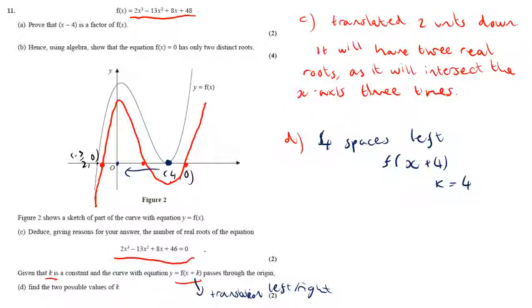But then the other thing that could happen is it could shift to the right and it could shift like 1.5 or 3 over 2 spaces. Right. And a translation of 3 over 2 spaces to the right would be represented by f of x minus 3 over 2. And so therefore, k could also be negative 3 over 2. Thank you.